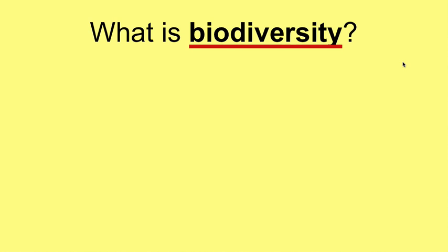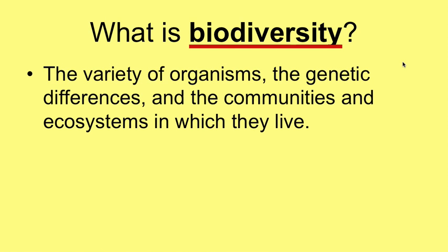Now, biodiversity — look at the term. It means the differences among living things, the variety of organisms and their genetic differences. Remember we talked about those variations when we talked about evolution that are part of a certain community or ecosystem. I like to teach these two back-to-back because you'll start to see how ecology and ecosystems really drive natural selection and evolution. Now that you know a little about evolution, you'll see how they kind of work hand-in-hand.